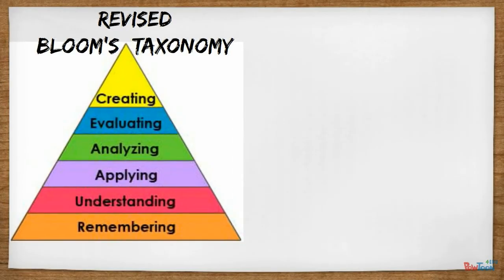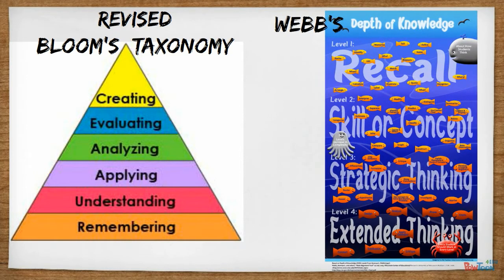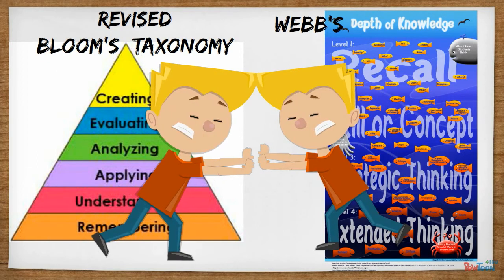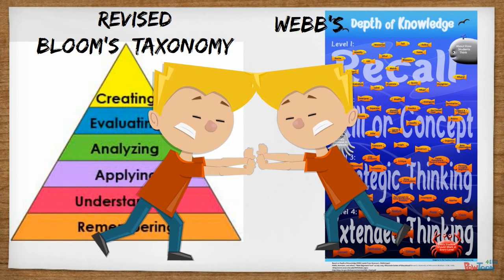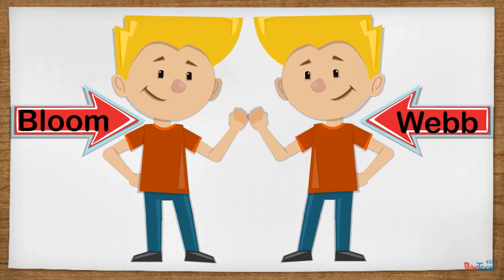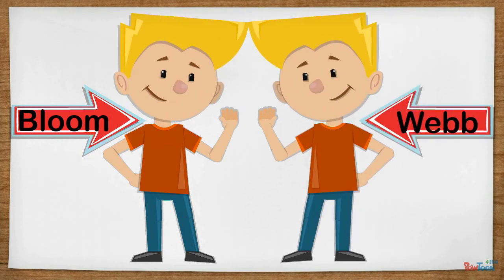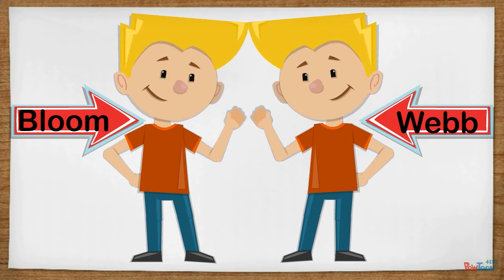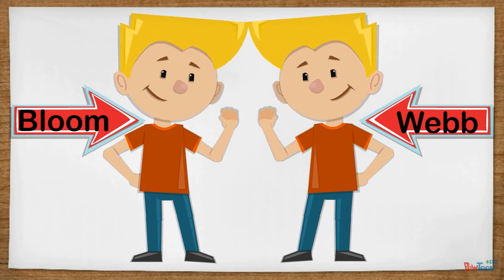Educators had been using some version of Bloom's Taxonomy for a while when Webb introduced his Depth of Knowledge structure. Because both structures use similar terms, many folks thought that it was like picking sides — it had to be either Team Bloom or Team Webb. But Bloom and Webb do not have conflicting messages; they actually work together. So let's see how RBT's levels of thinking work in Webb's Depth of Knowledge to measure the complexity of tasks.